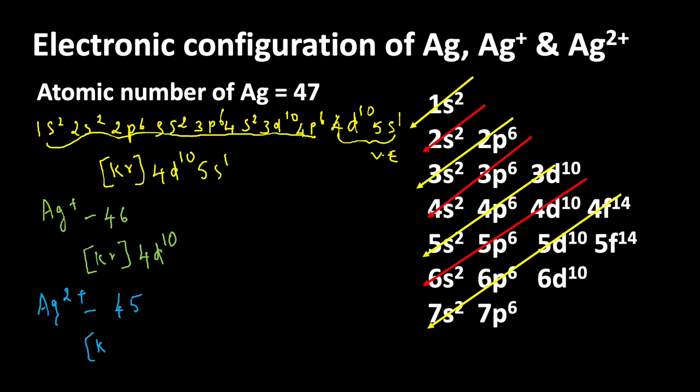Writing krypton first, if 2 electrons are ready to leave, one from 5s orbital then another electron from 4d orbital, now 4d becomes 4d9 for Ag 2 plus ion. So this is the electronic configuration for silver and its ions: [Kr] 4d9.